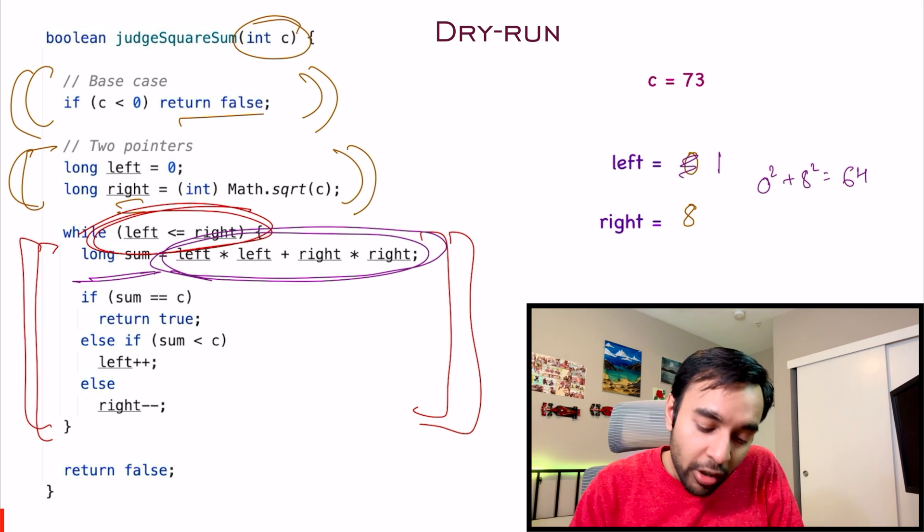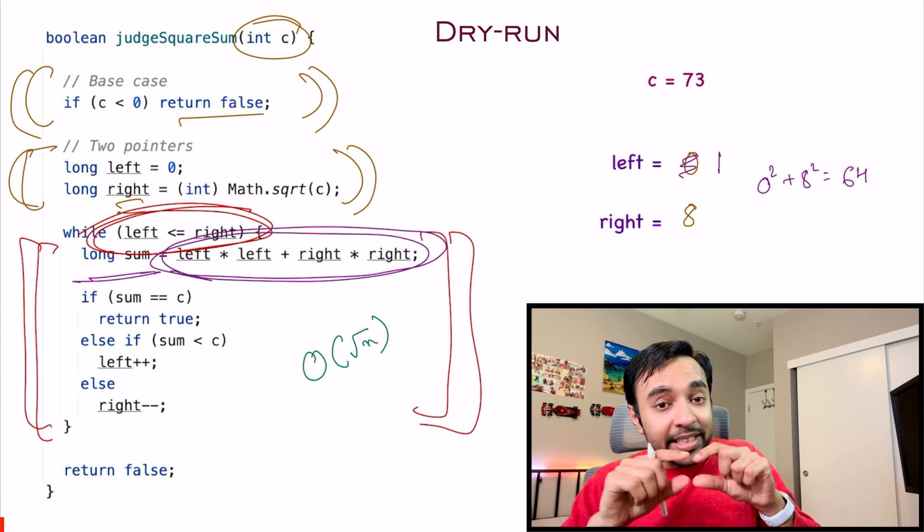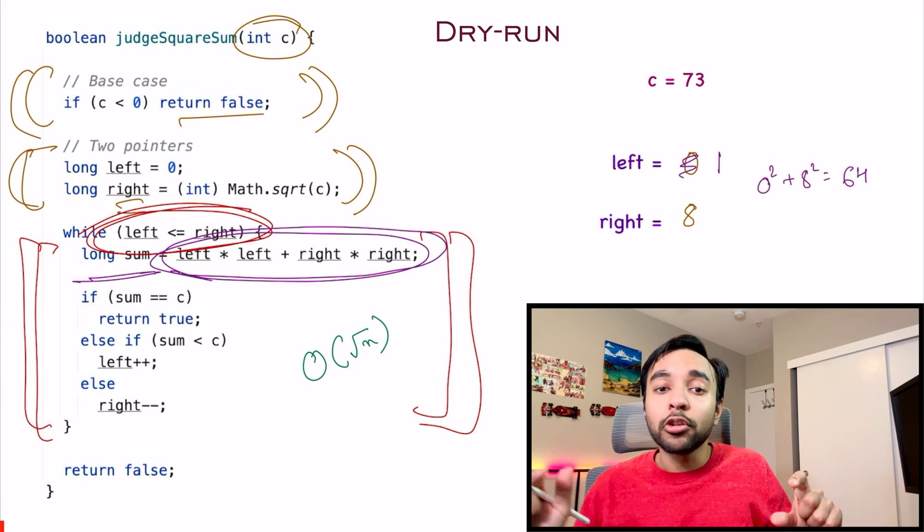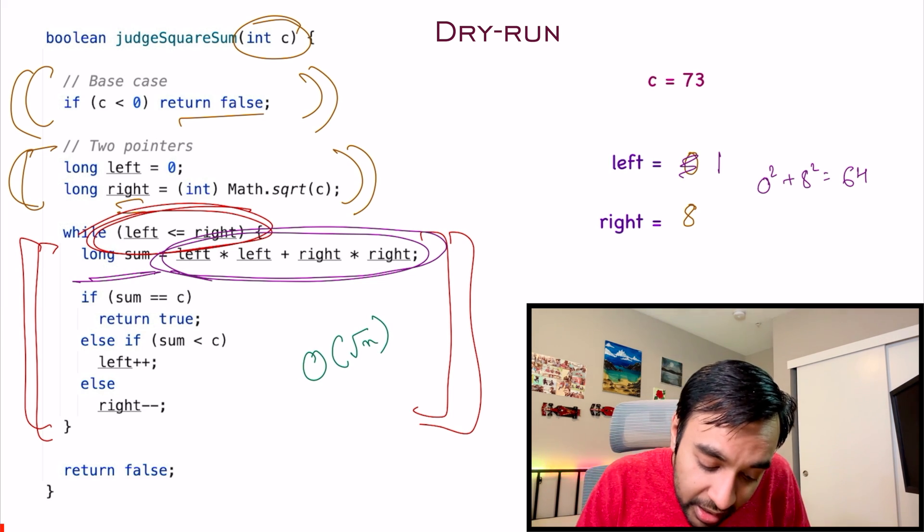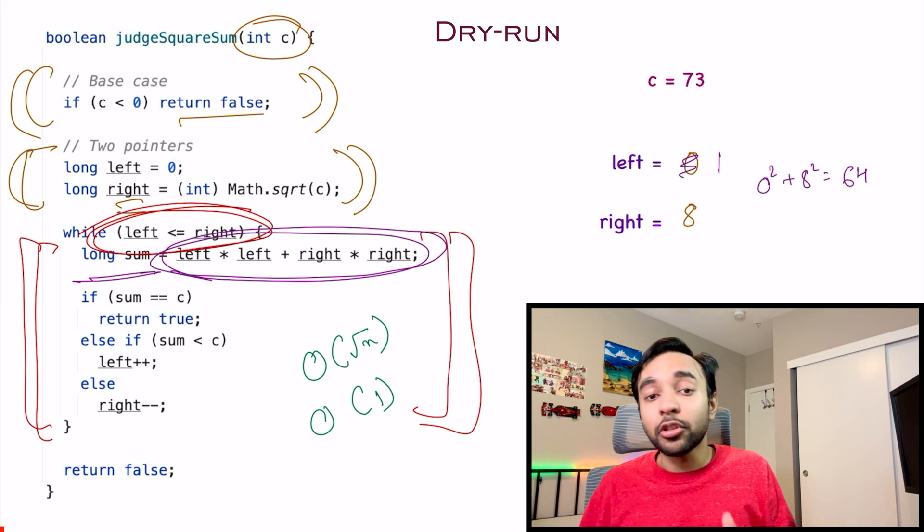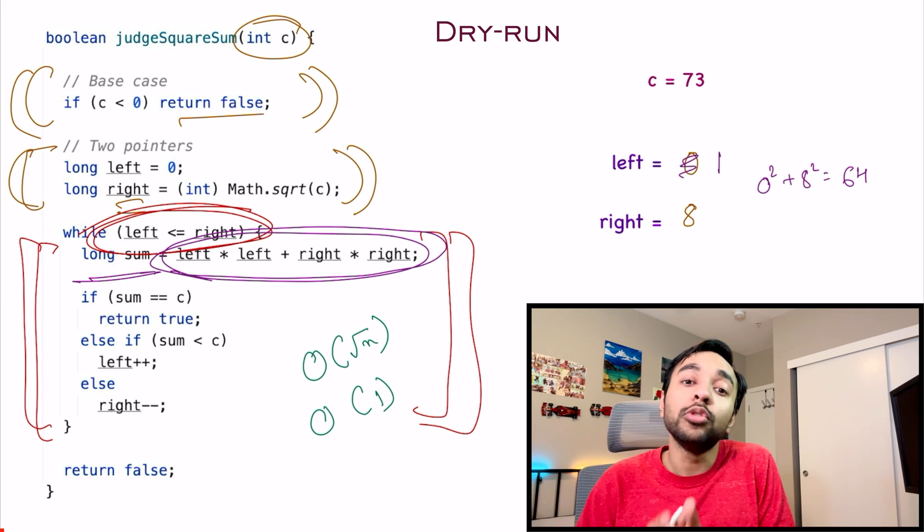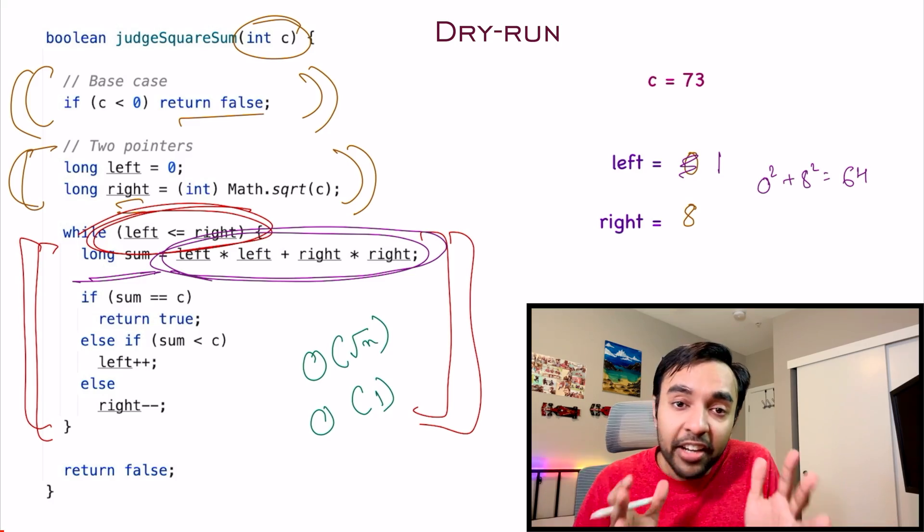The time complexity of this solution is O(√n), because these are the maximum integers that you will have to traverse. And the space complexity of this solution is O(1), because you do not take any extra space to arrive at your solution.